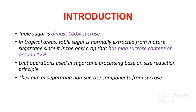Table sugar is almost 100% sucrose. In tropical areas, table sugar is normally extracted from mature sugar cane, since it's the only crop that has a high sucrose content of around 12%. The operations used in sugar cane processing are based on the size reduction principle, aiming at separating non-sucrose components from sucrose. Below are the stages of sugar cane processing.